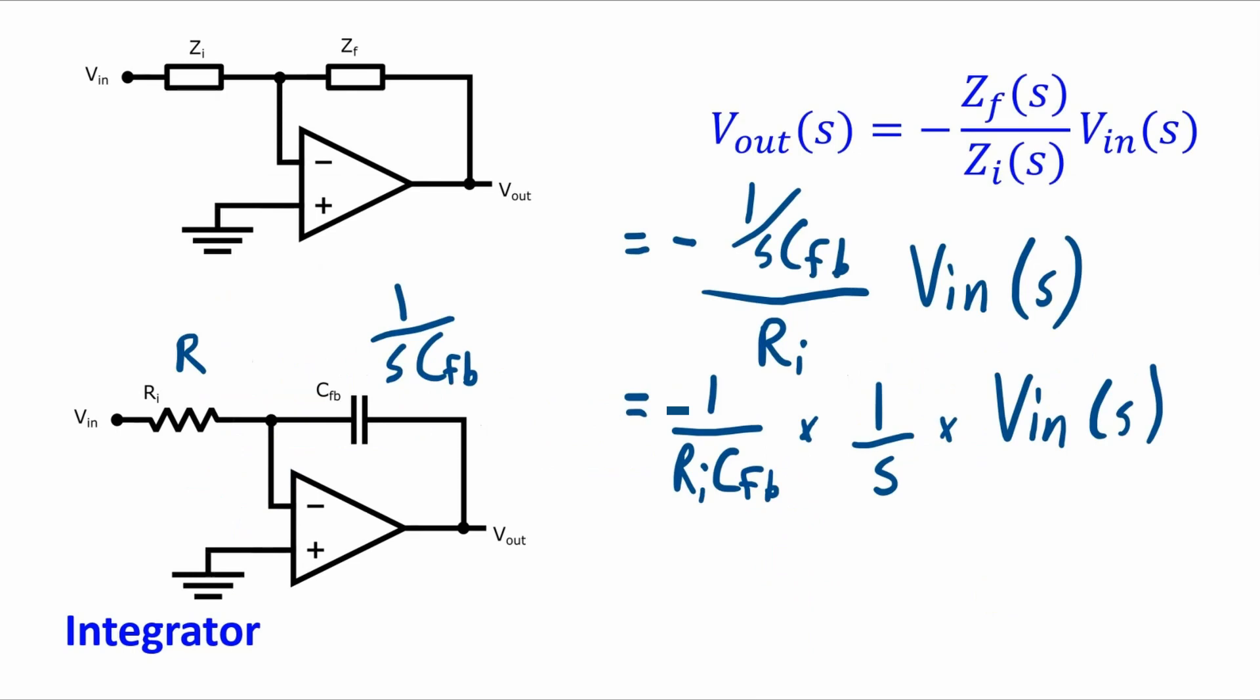So going back to here we've got 1 over s times a function in the s domain times a constant. So when I do the inverse Laplace transform I will get that constant out front times the integral of the function in the time domain. So there you can see why this circuit is called an integrator.